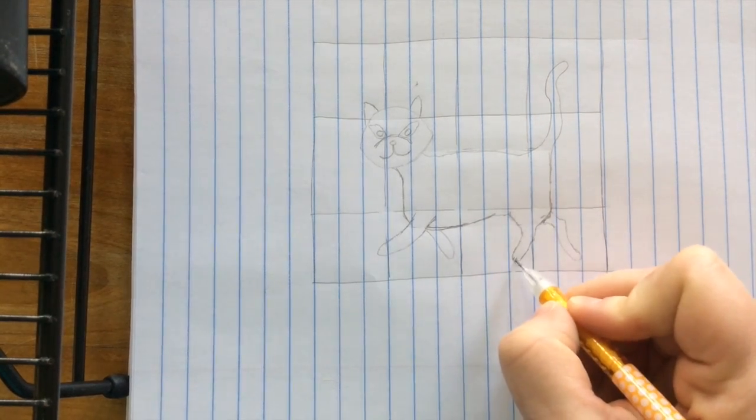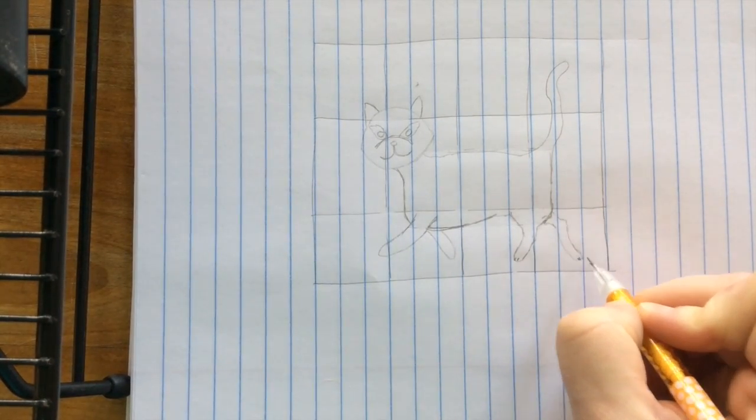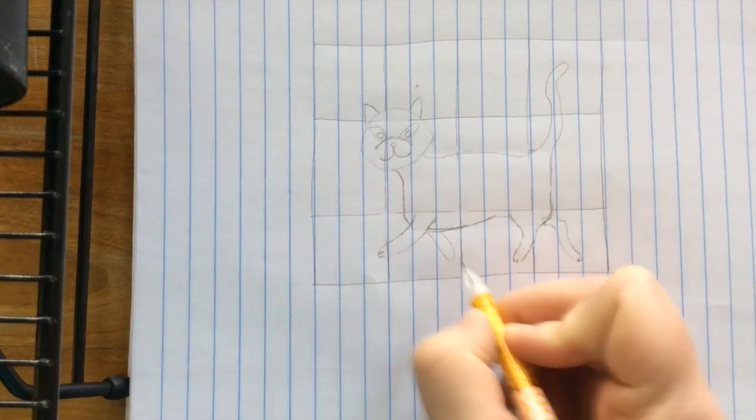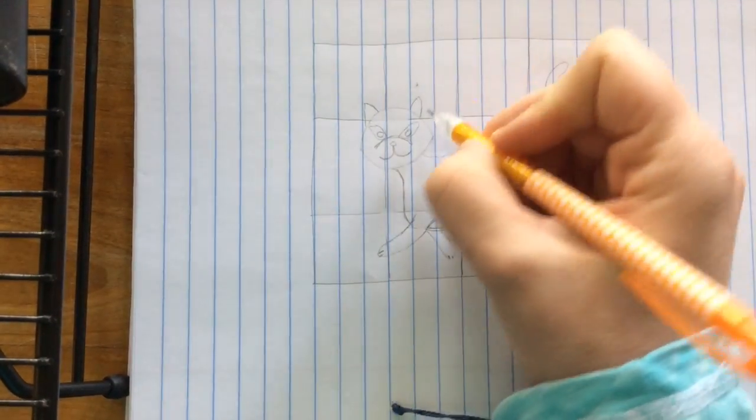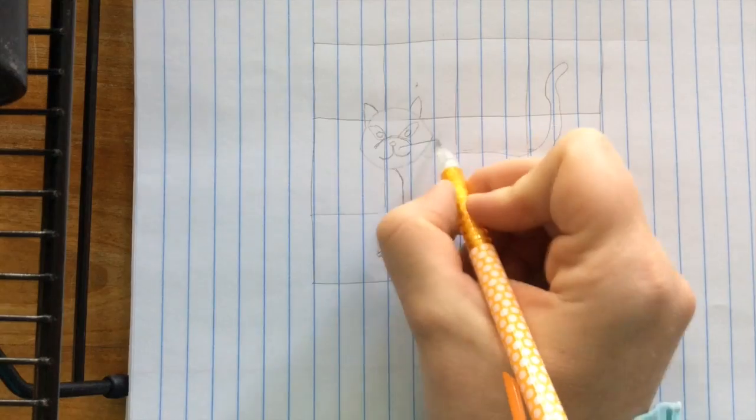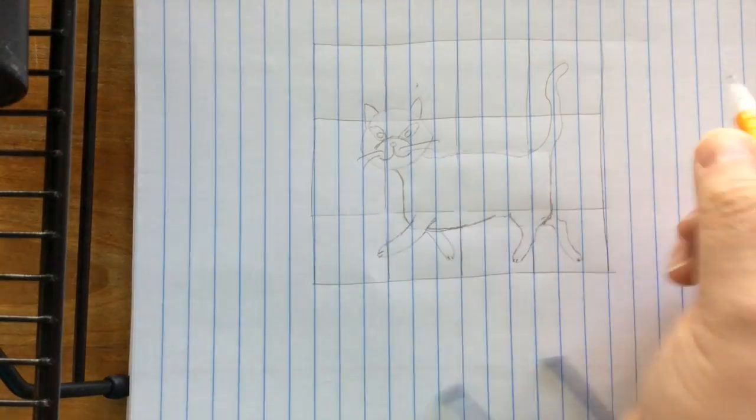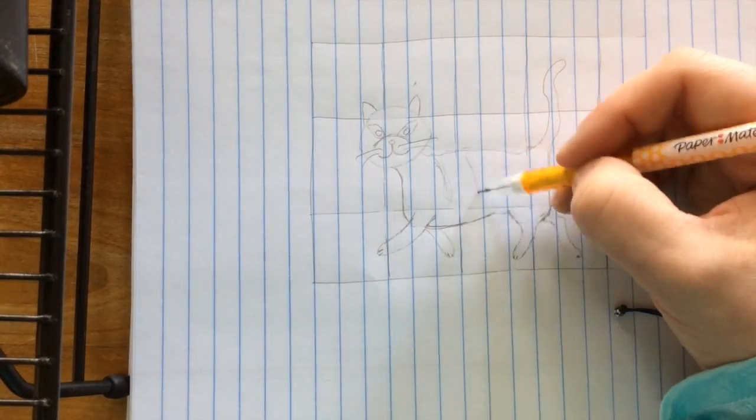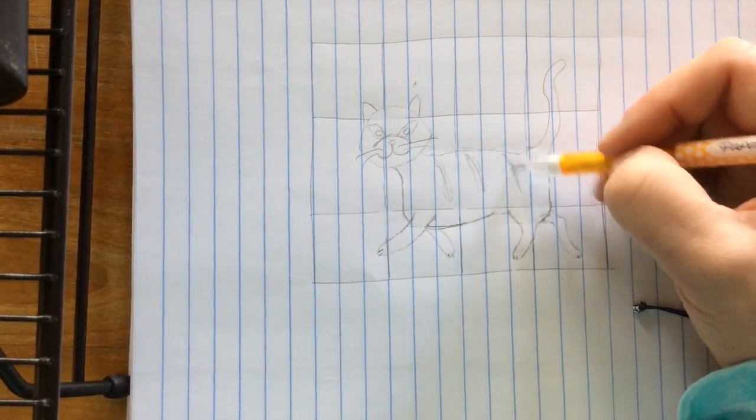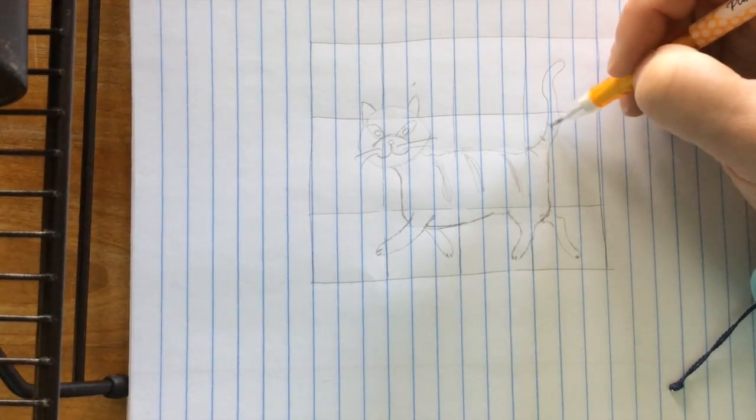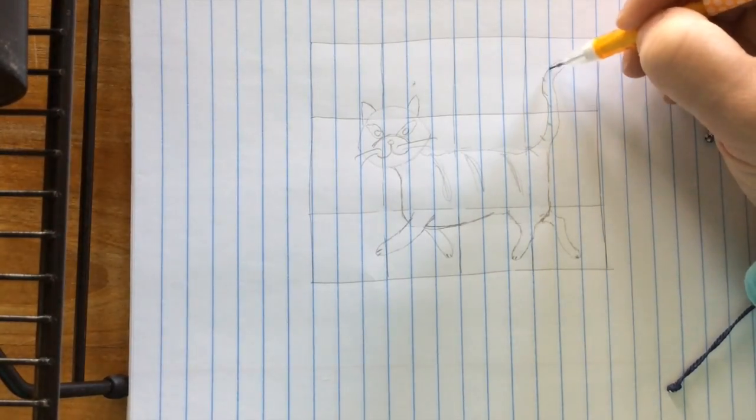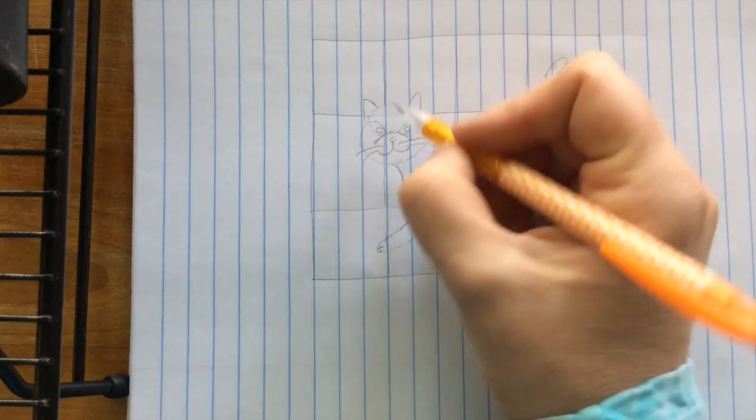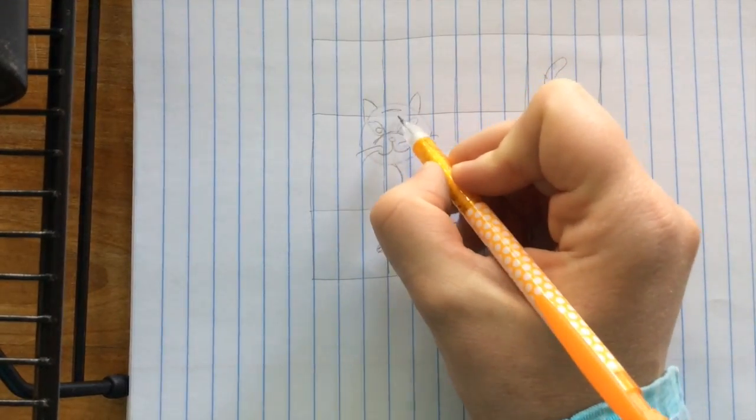Maybe put some little toes on our feet. Maybe some whiskers. Maybe some stripes. Maybe stripes all the way down its tail. Maybe some stripes on its head.